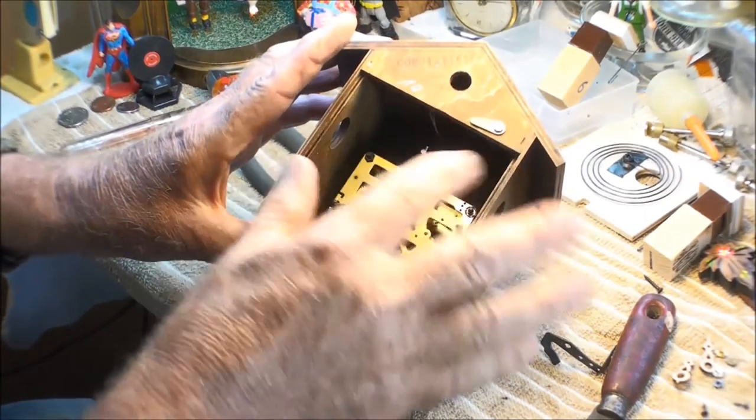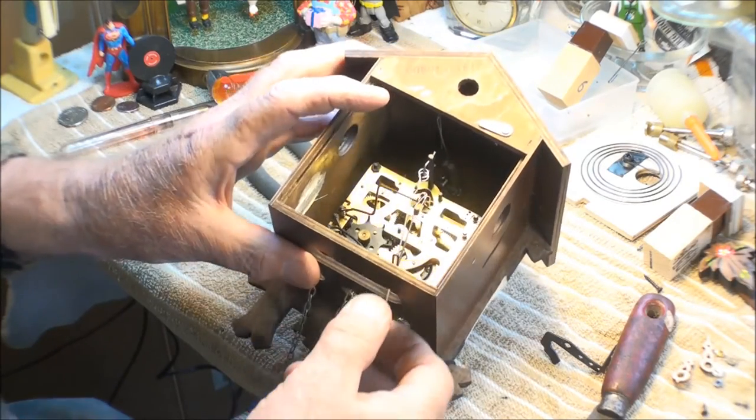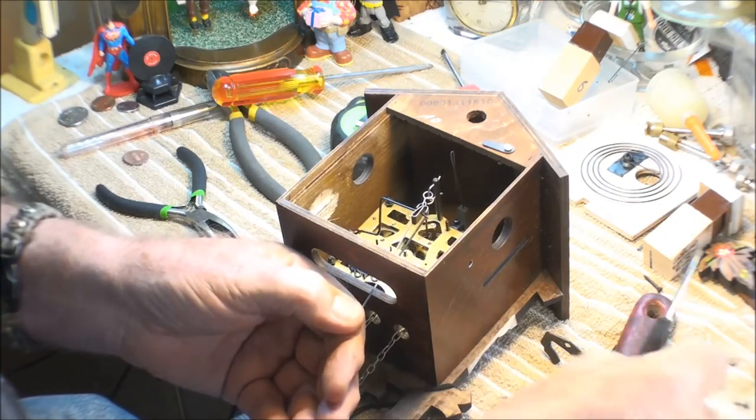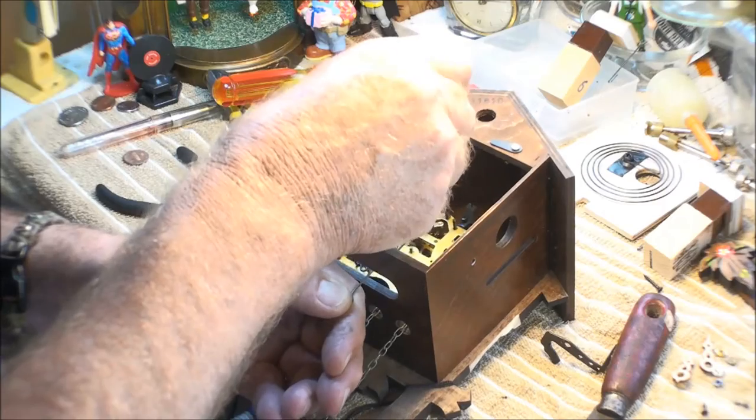Now, because this is such a small area to work in, it's good to take your wire off that goes to the pendulum. Take your screwdriver and right where it hooks on, just open that up a little bit so you can pull it out this way.